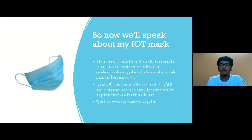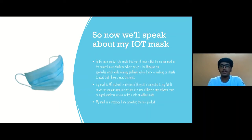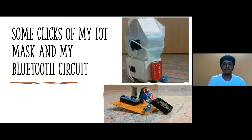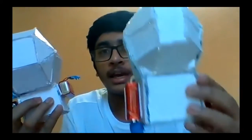So now I'll speak about my IoT mask. The main reason I created it is that with a normal or surgical mask, you get fogging on your spectacles, which leads to many problems while driving or walking on streets. My mask is IoT enabled, connected to Wi-Fi, but if there are network issues we can switch it to an offline mode. The mask is currently in the prototyping stage and I am converting it into a product. I have done this mask in two variants — one in IoT and one in Bluetooth.